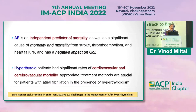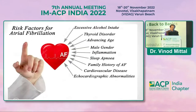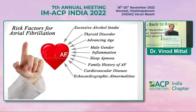AF is not only caused by hyperthyroidism. Other important causes include excess alcohol intake, advancing age (over 65 and over 75 years), gender, inflammation, sleep apnea, family history of AF, CVD, and cardiographic abnormalities. If a patient has hyperthyroidism and AF, it is not necessarily because of the hyperthyroidism — it may be due to other disorders.